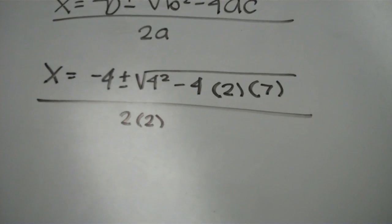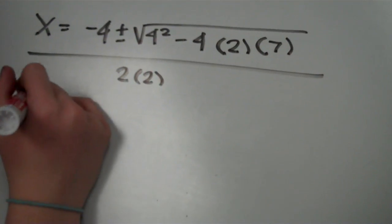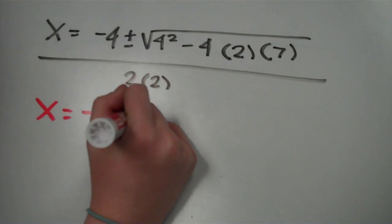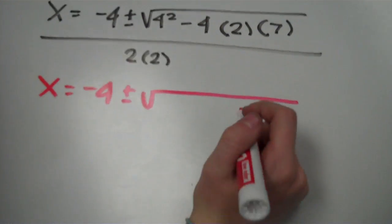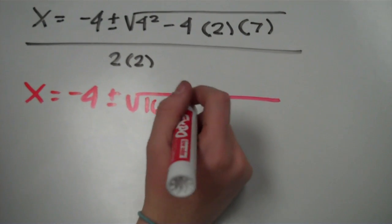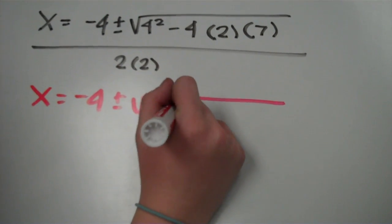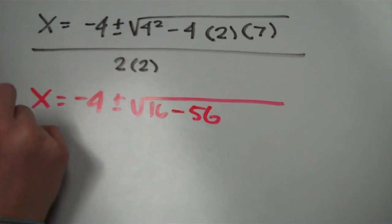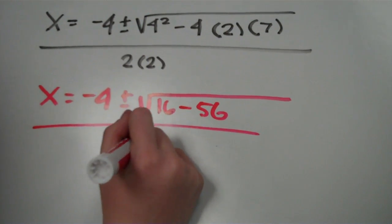Then you start to solve it. X equals negative 4 plus or minus square root 4 squared is 16, negative 4 times 2 times 7 is negative 56, all over 2 times 2, which is 4.